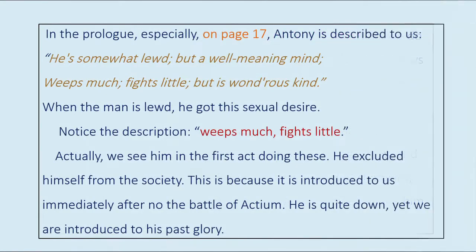In the prologue, especially on page 17, Antony is described to us: he is somewhat lewd but a well-meaning mind, weeps much, fights little, but is wondrous kind. When the man is lewd, he has this sexual desire. We see him in the first act doing these things — he excluded himself from society, because it is introduced to us immediately after the battle of Actium. He is quite down, yet we are introduced to his past glory.